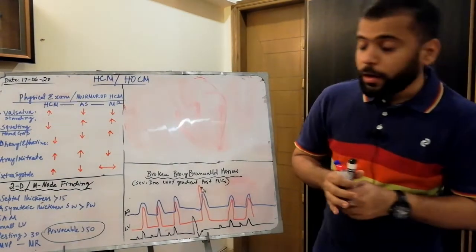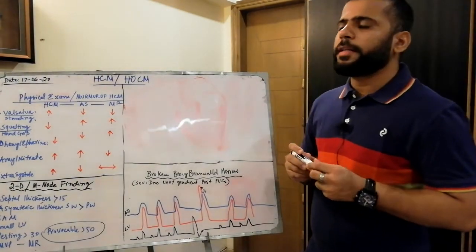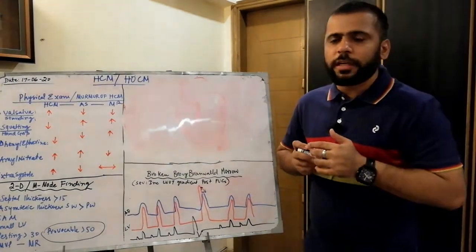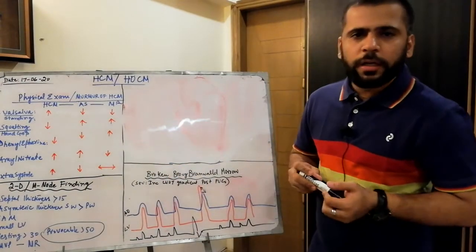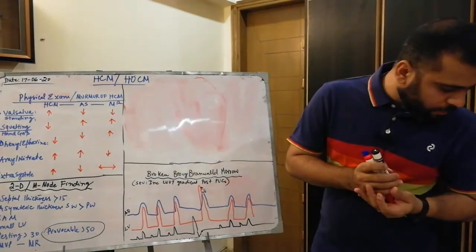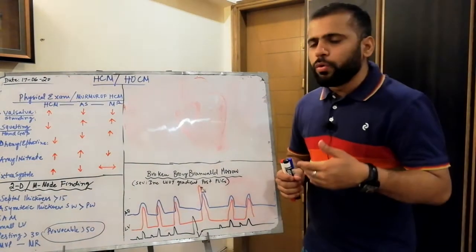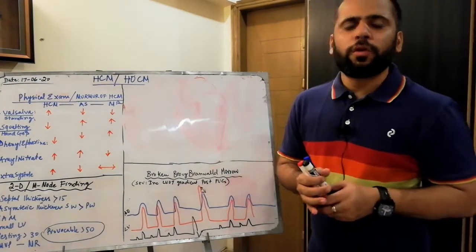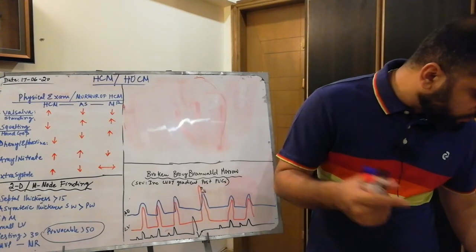Exercise testing is important in HCM. Number one is to provoke or check provokable gradients in your patient. Number two is to check the functional capacity of your patient. Number three is to risk stratify your patient with HCM for sudden cardiac death — we will discuss ICD indications later on.